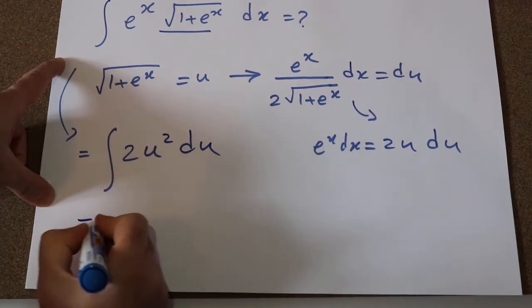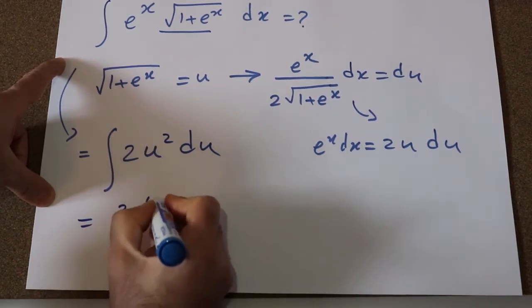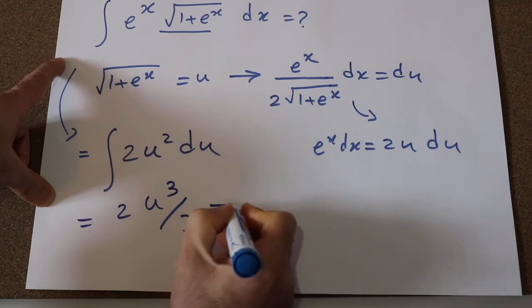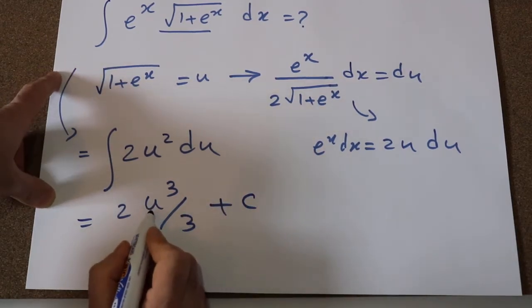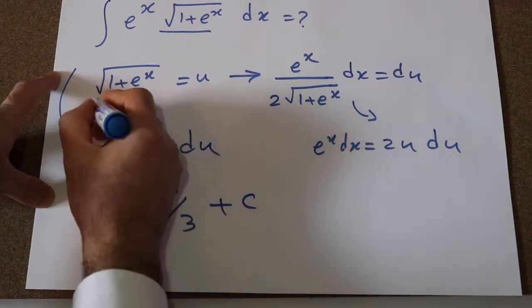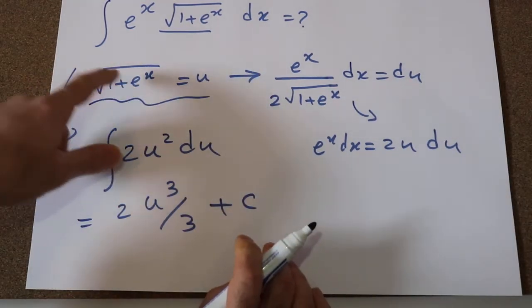So now this integral will be equal to 2 times u³ with the power of 3 plus C which is the constant of the integral. So all you need to do here is to substitute this parameter u with the definition of u, which is square root of 1 plus e^x.